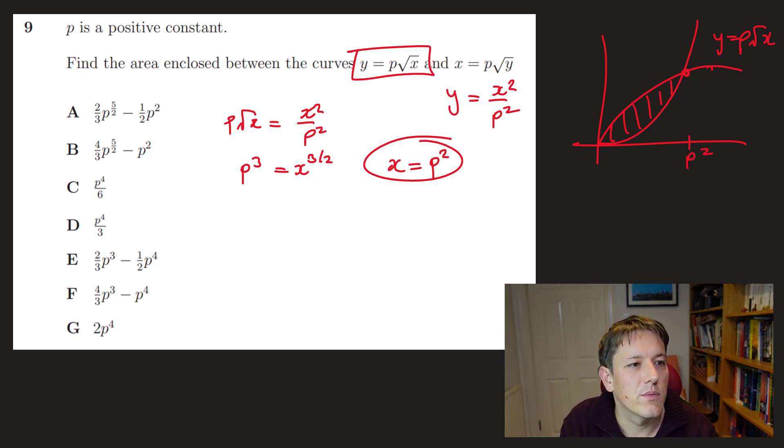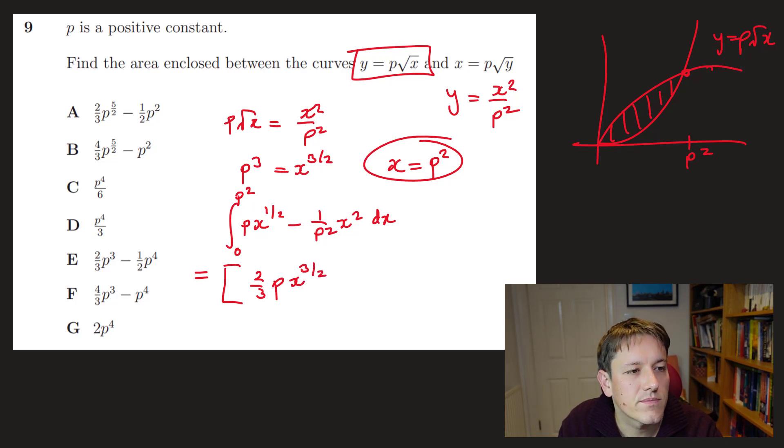Okay, so the area that we're looking for is the integral between the upper curve here, p root x, which I'll write as p times x to the 1 half minus the lower one, which is going to be 1 over p squared times x squared. And I want to integrate that between 0 and p squared dx. Okay, so I'm going to get 2 thirds p x to the 3 over 2 minus 1 over p squared times 1 third x cubed between 0 and p squared.